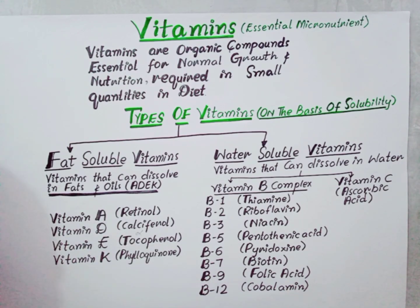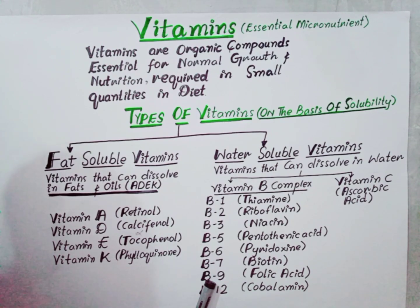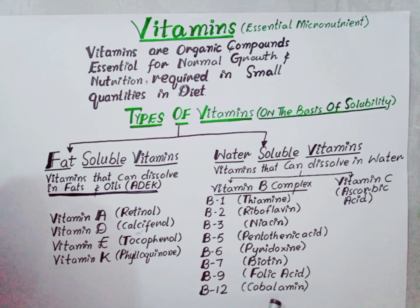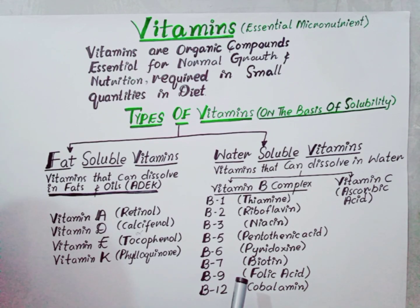Vitamin B9, also called folic acid, performs a vital role in the formation of DNA, and was first discovered in yeast. Vitamin B12, cobalamin, functions as a coenzyme in our body and plays a vital role in maintaining neurological functions and red blood cell formation.